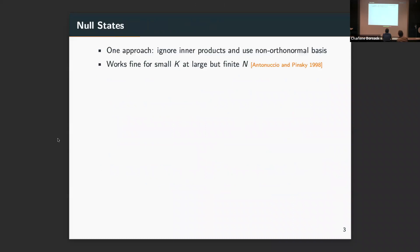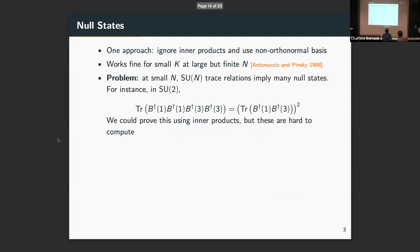One approach is to ignore the problem, and you can get away with this in a certain regime. If you want to study N that is finite but still very large, say SU(100) theories, you can do this, and even though your basis is not orthonormal, you'll get the correct eigenvalues. This is what was done in the 90s. The difficulty is when you want to go to small N, because not only were those states not orthogonal, they weren't all physical. Many of them were null.